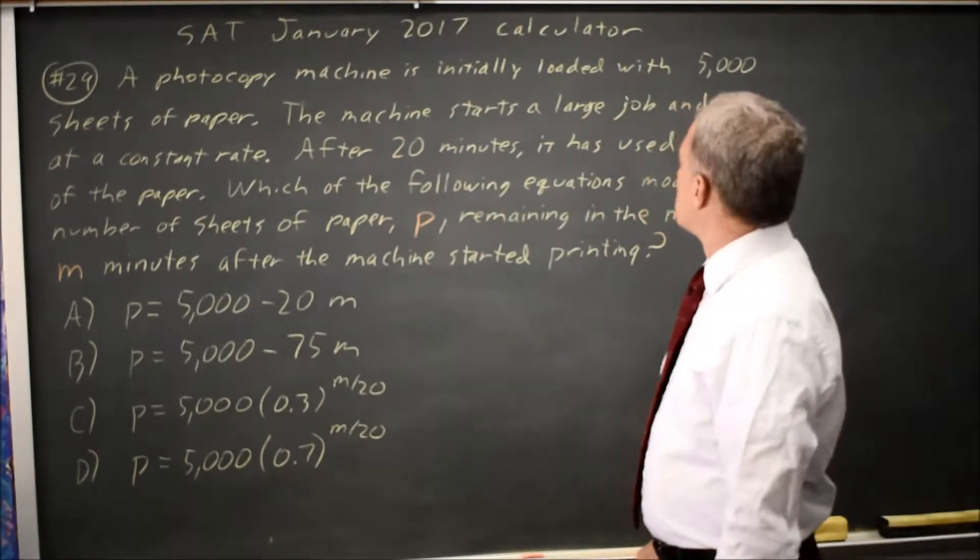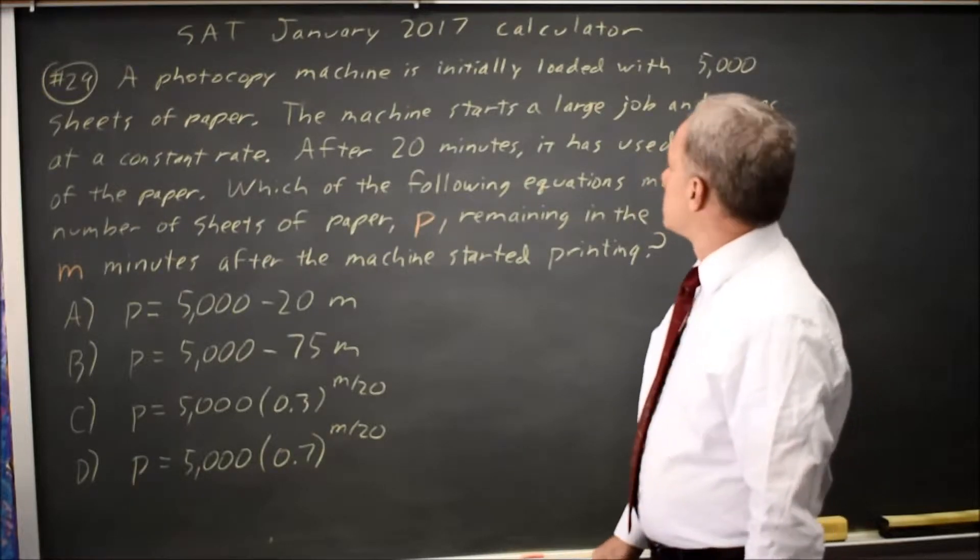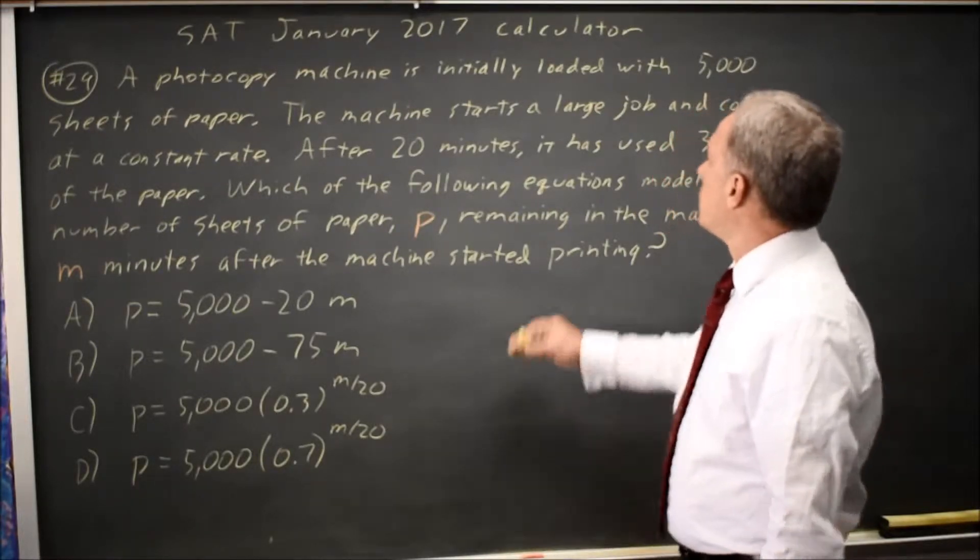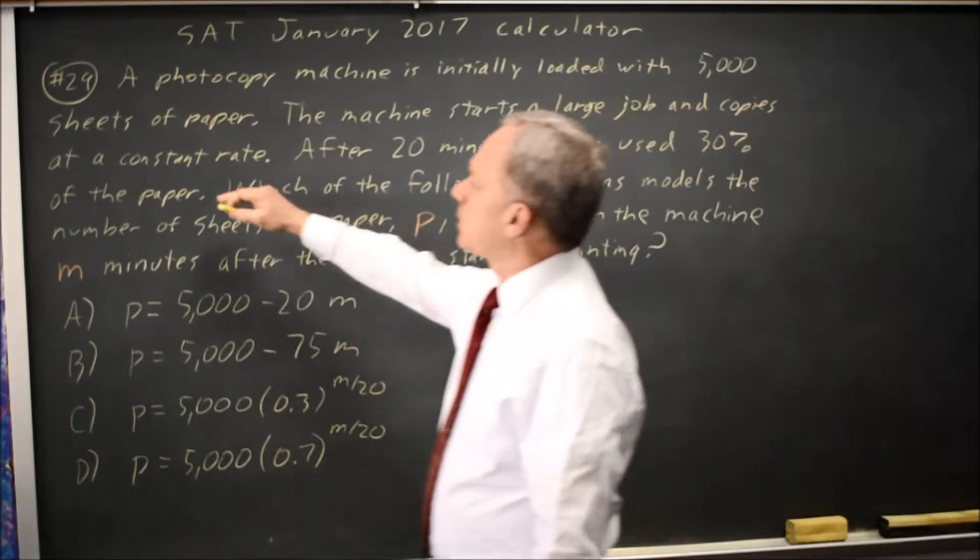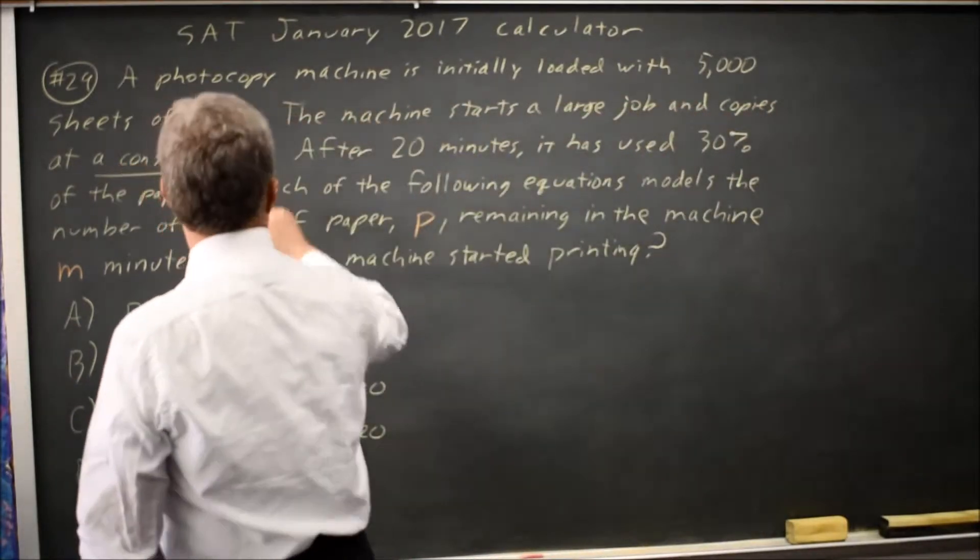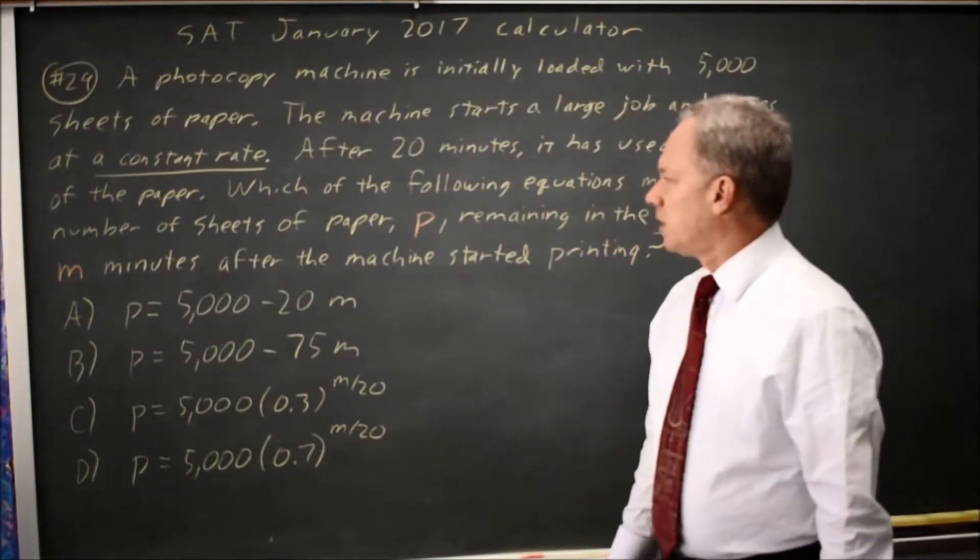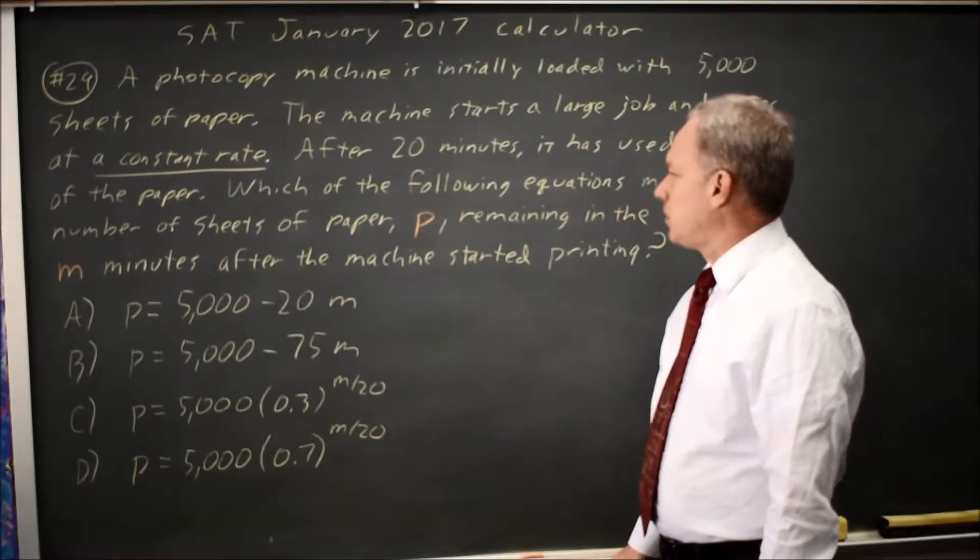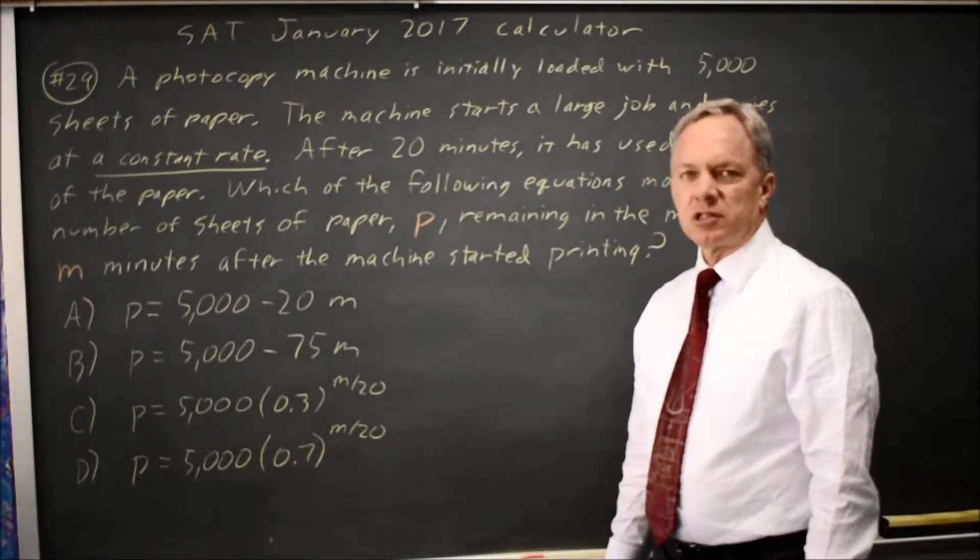After 20 minutes on a large job, it has used 30% of the paper, and the machine is copying at a constant rate. That's important. Which of the equations models the number of sheets of paper P remaining in minutes after the machine starts printing?